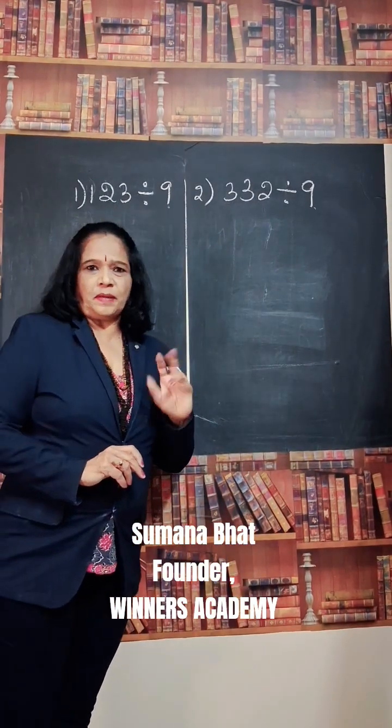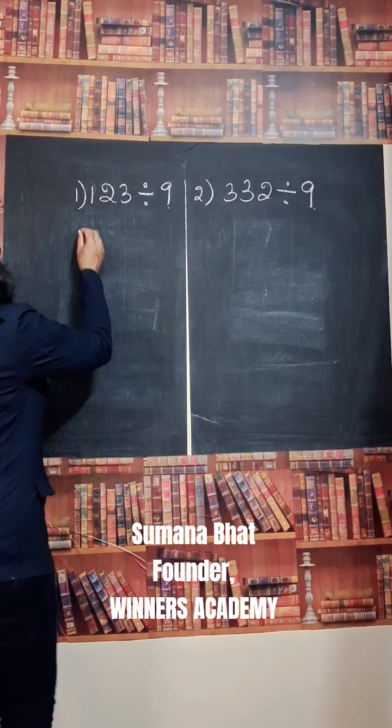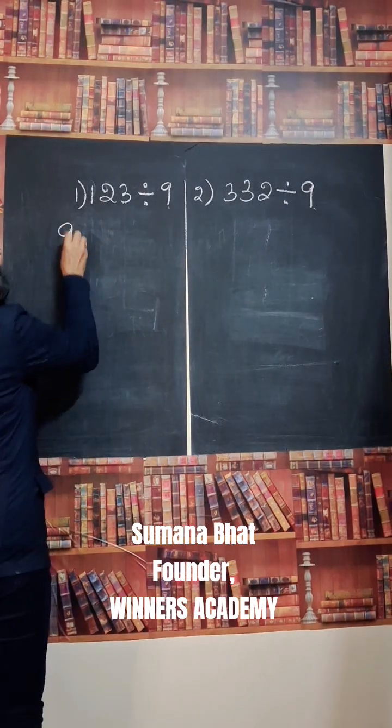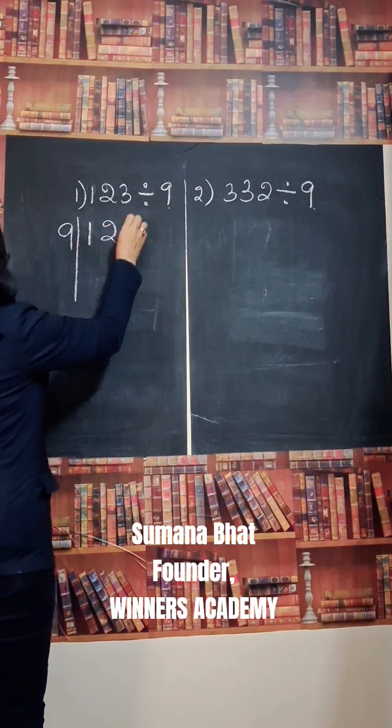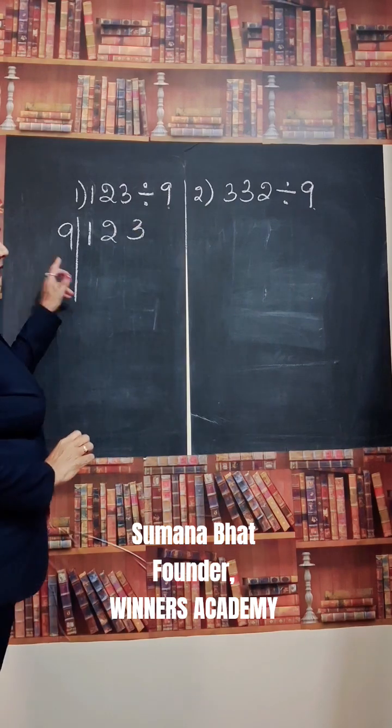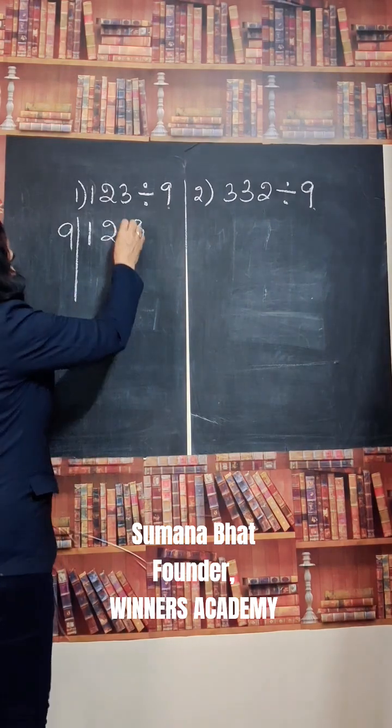123 divided by 9. See, this is 9. 123. Here, we are dividing it by 9 by single digit.